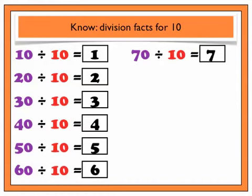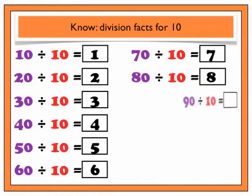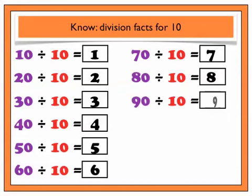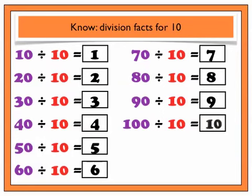70 divided by 10 is 7. 80 divided by 10 is 8. 90 divided by 10 is 9. And 100 divided by 10 is 10.